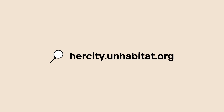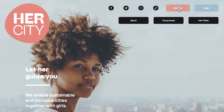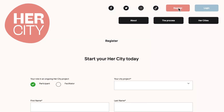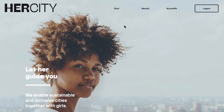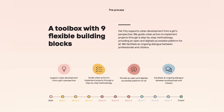Visit hercity.unhabitat.org, register, click Start. The Toolbox follows a unique process containing nine building blocks as a digital guideline on how to co-plan cities from a girl's perspective.